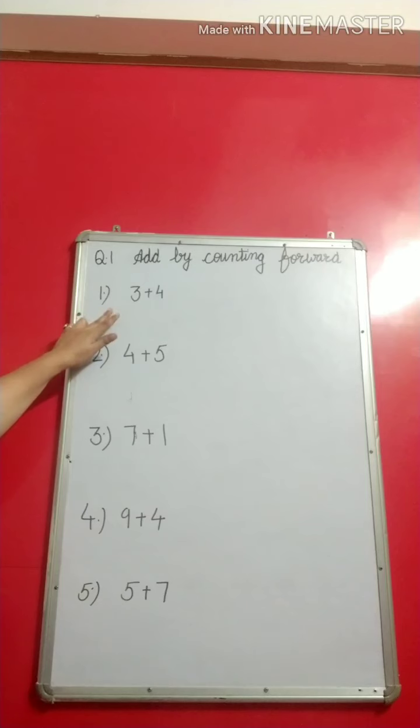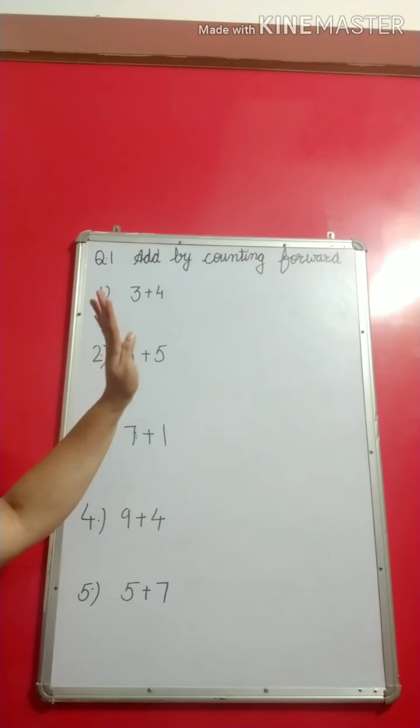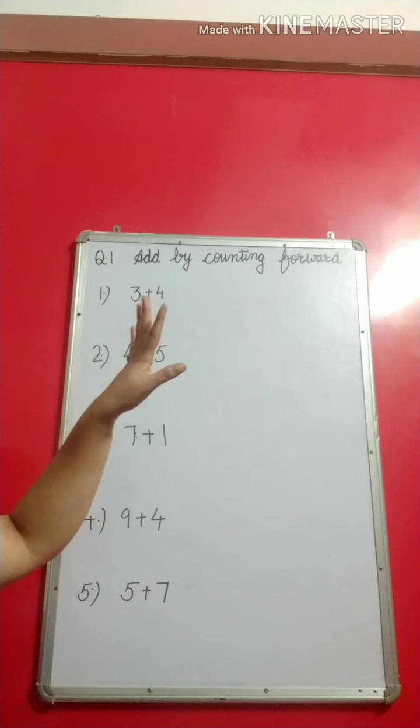We are given here two numbers, 3 and 4. What is given here is 3 plus 4. It is quite easy. I have told you many times how we add the numbers. We keep the first number in mind. 3 we will keep in mind, and generally what we do is take 4 fingers up and start counting: 4, 5, 6, 7. This is the way of adding.